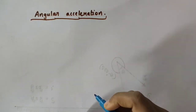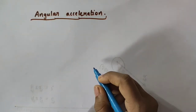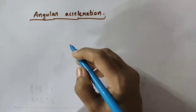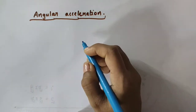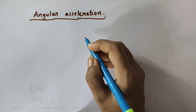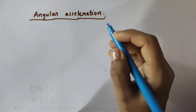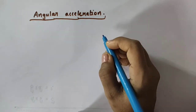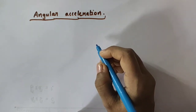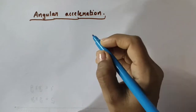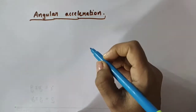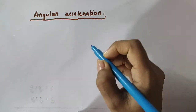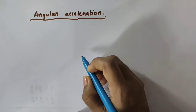Hello everyone. In this video we are going to discuss about angular acceleration. In our previous videos, we have discussed about angular displacement and angular velocity in rotational motion, in analogous to the linear displacement and linear velocity in translational motion. That is, angular displacement is the rotational analog of linear displacement, and angular velocity is the rotational analog of linear velocity in translational motion.